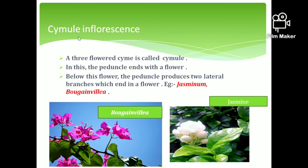The next type is cymule inflorescence. In this case, there are two flowers arranged on either side. The main axis terminates in a flower, and then two lateral branches each end in a flower as well, forming the cymule inflorescence.